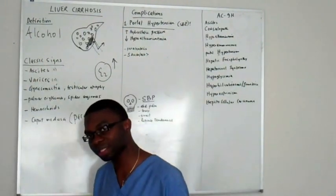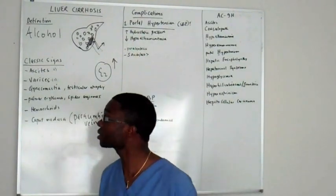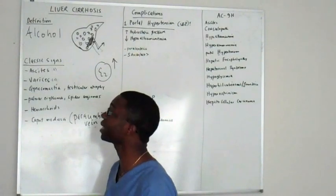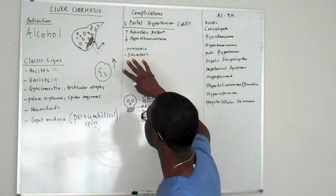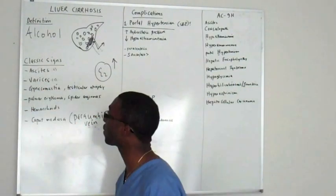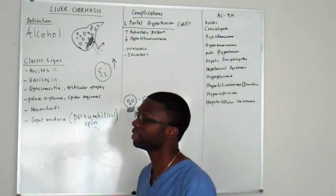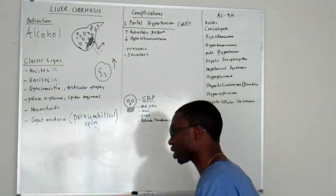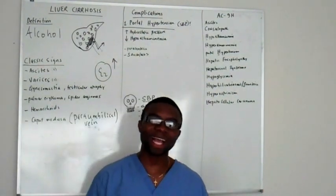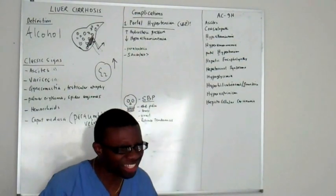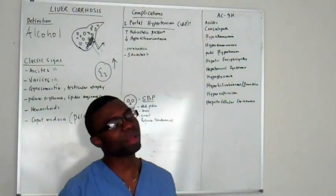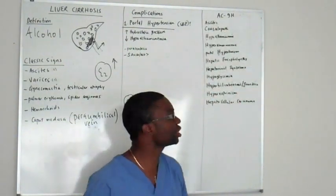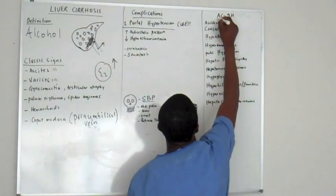Those are the classic signs of portal hypertension due to cirrhosis. I gave you the mnemonic ABCDEFGH of things that can cause liver cirrhosis. Today we're focusing on portal hypertension and the side effects of liver dysfunction. I hate memorization if you don't know why you're memorizing. The mnemonic is AC9H - A as in apple, C as in cat, 9 and H's.